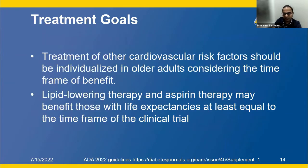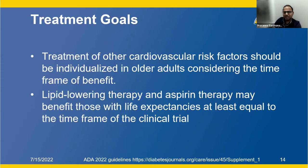Treatment of other cardiovascular risk factors should be individualized in older adults considering the time frame of benefit. Lipid-lowering therapy and aspirin therapy may benefit those with life expectancies at least equal to the time frame of the clinical trial — typically five to ten years. Beyond that, it is an extrapolation of results, and we statistically don't know. We have to consider the overall life expectancy of the person.